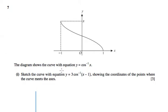Question 7, part 1 has given us the graph of the inverse cos of x. And it asks us to sketch the graph of 3 times the inverse cos of x minus 1. So this is starting off with a transformation question.